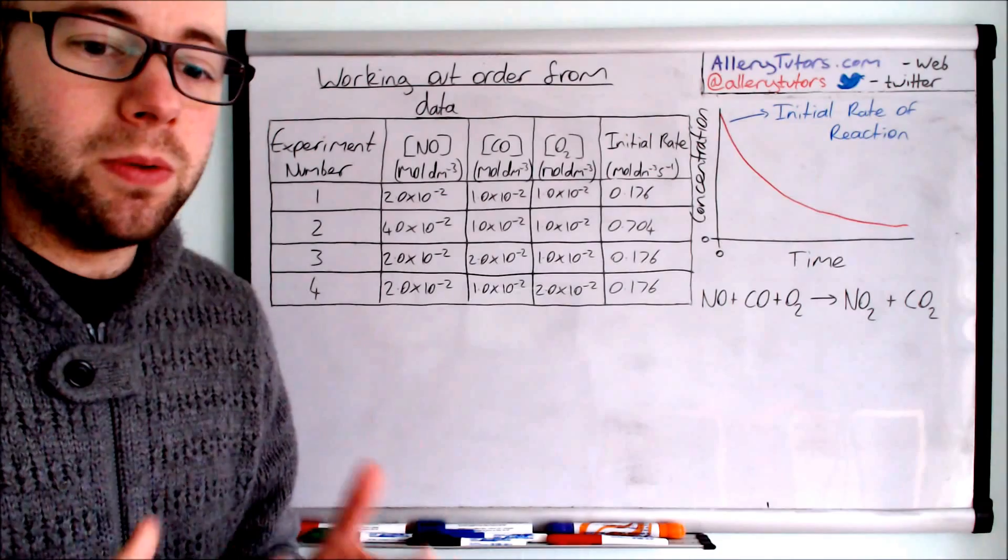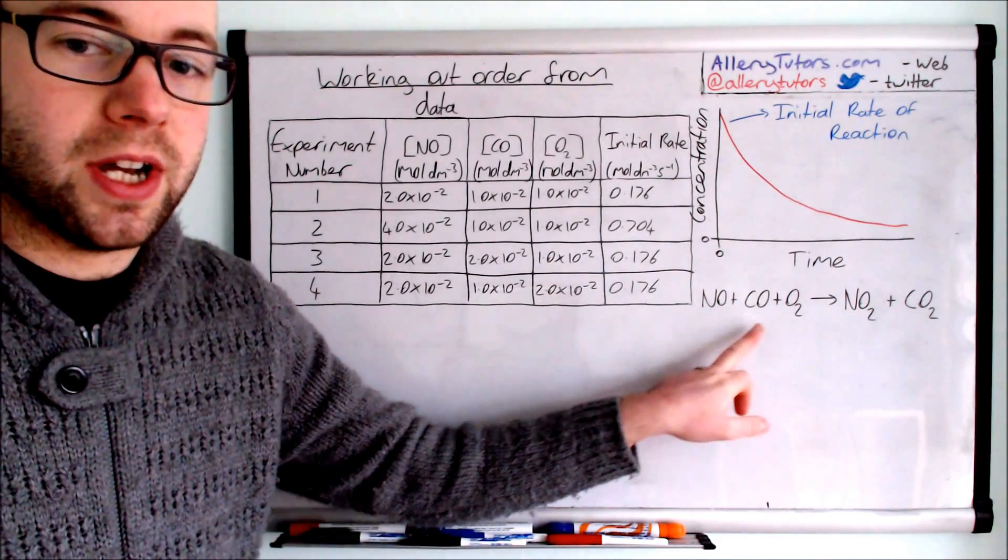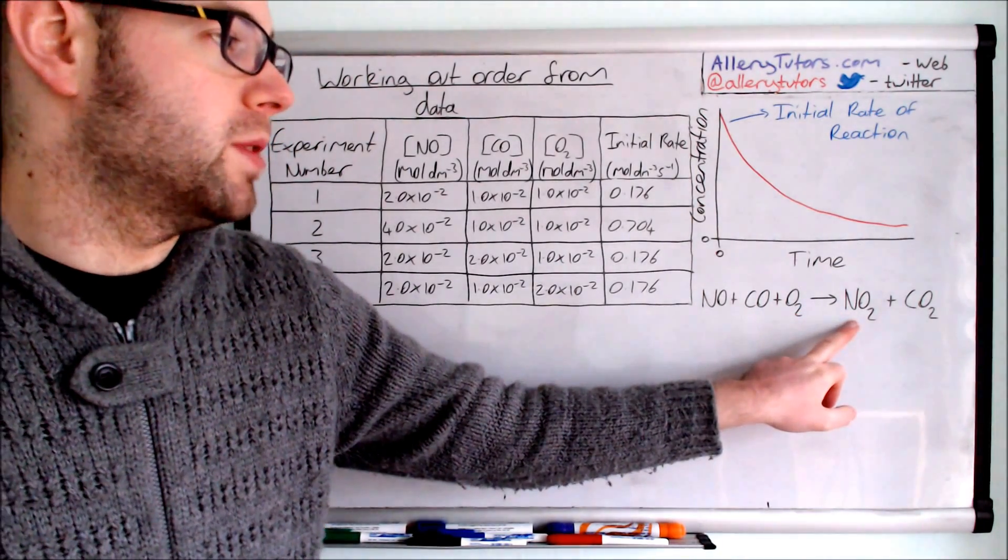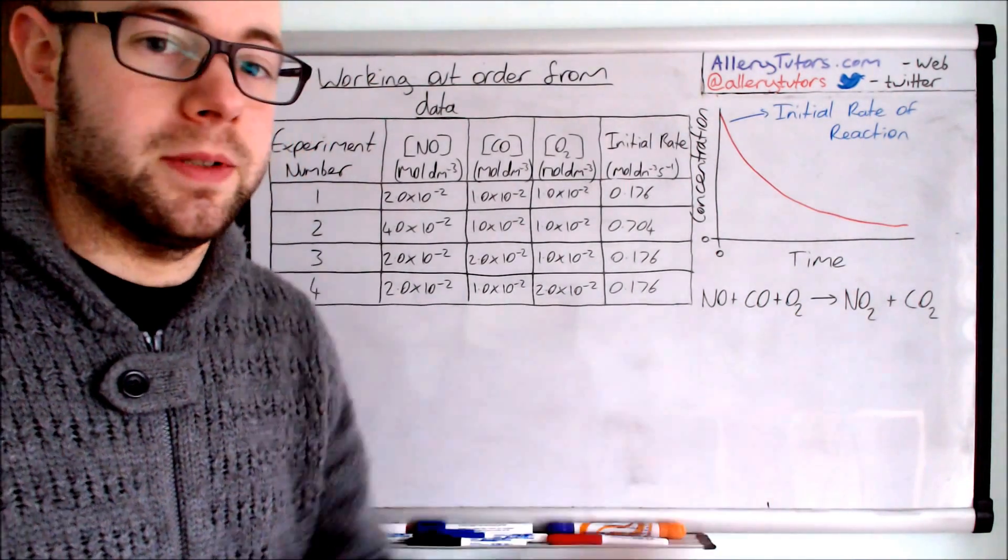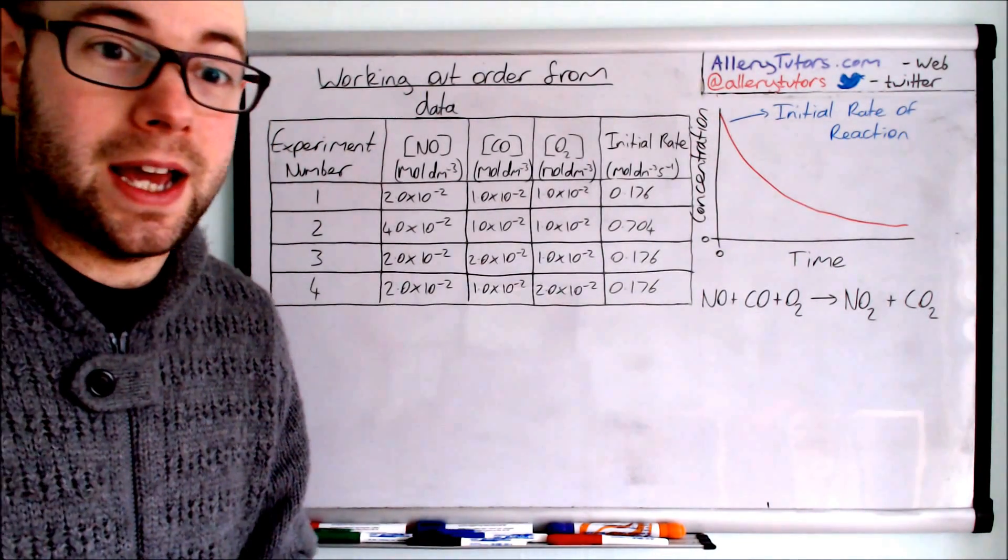Okay so what we're going to do is look at a particular reaction. This is nitrogen monoxide reacting with carbon monoxide and oxygen, that will form nitrogen dioxide and carbon dioxide. This reaction is obviously all gaseous but that doesn't make any difference.